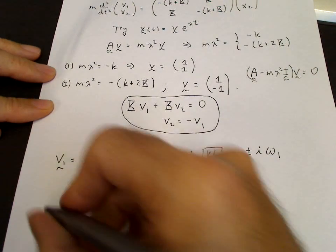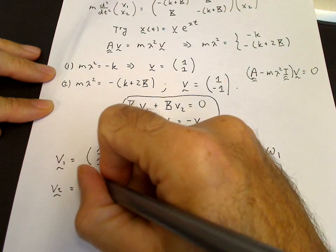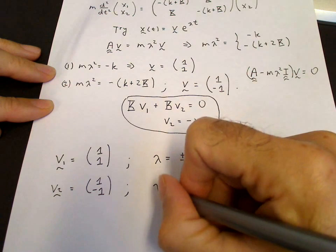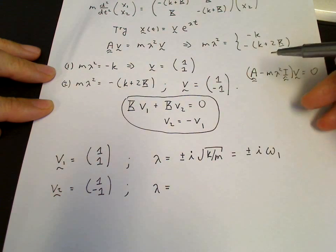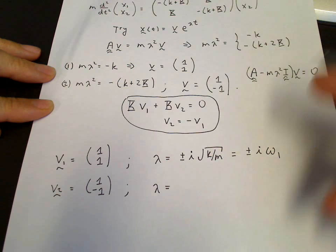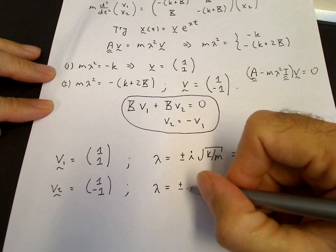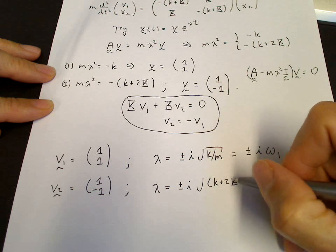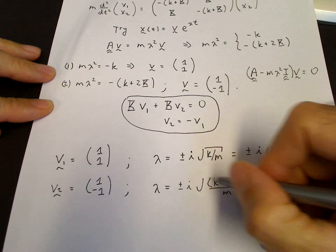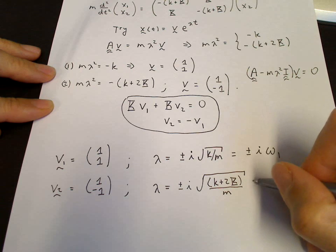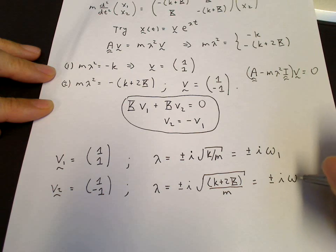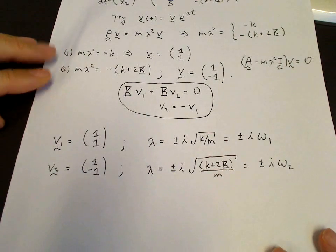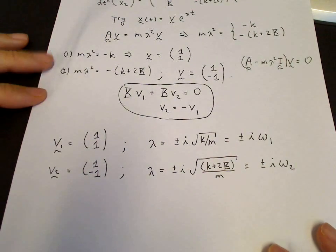For the second eigenvector [1, −1], the associated lambda — dividing by m and taking the square root — is plus or minus i times the square root of (k plus 2 capital K) over m, which we call plus or minus i omega 2. And that's all we need to construct a general solution.